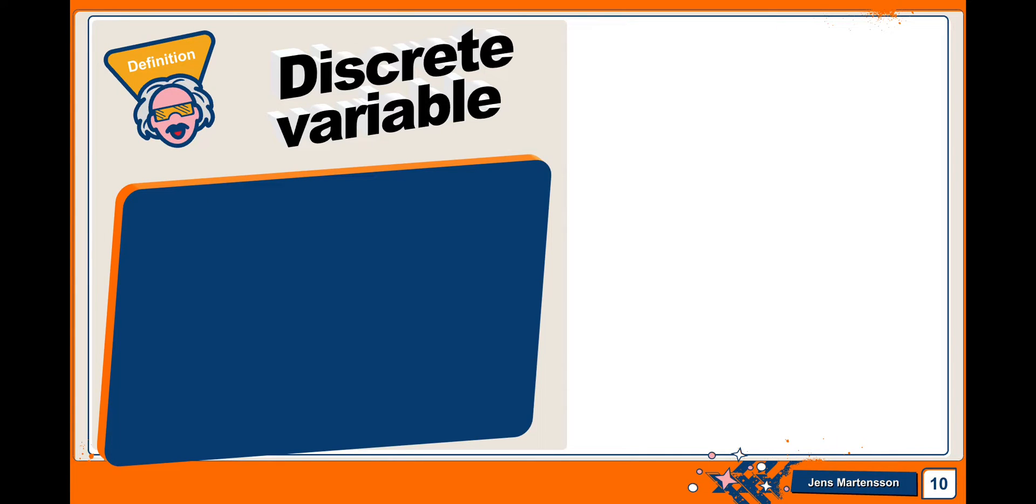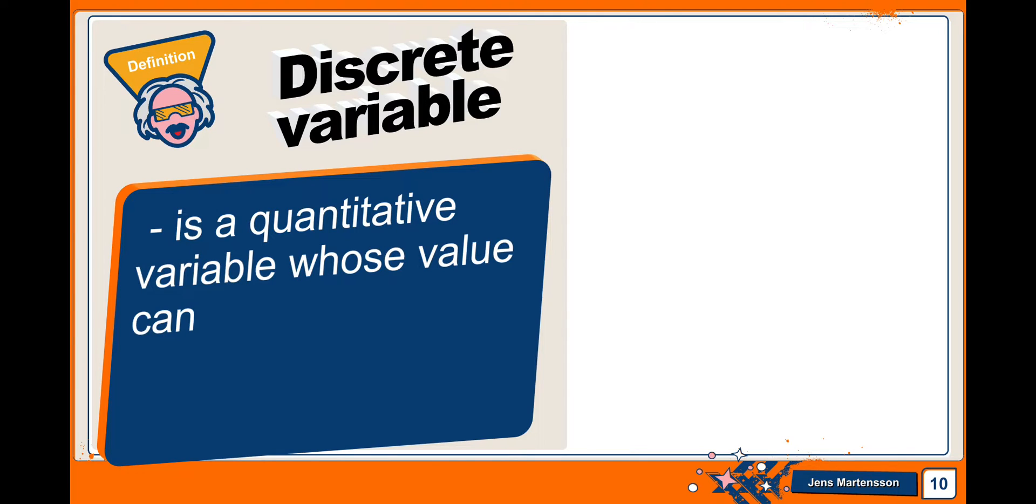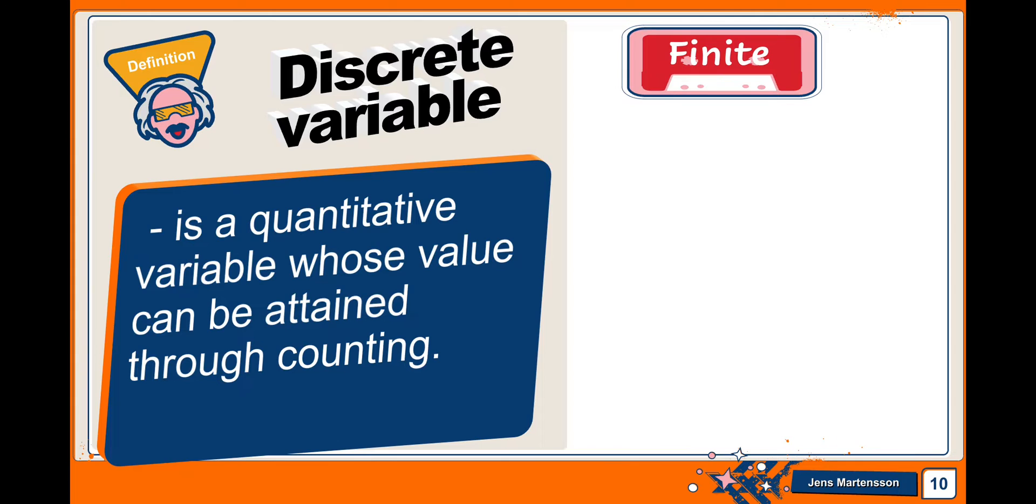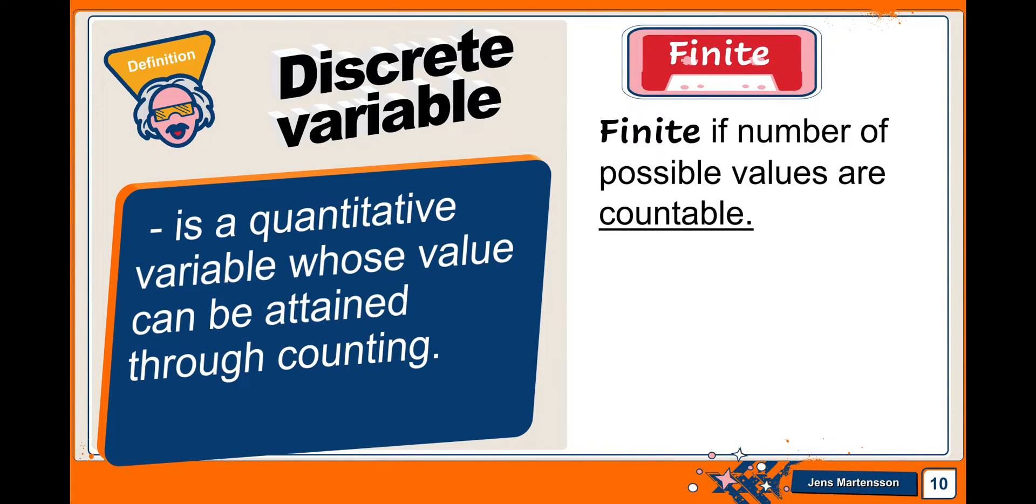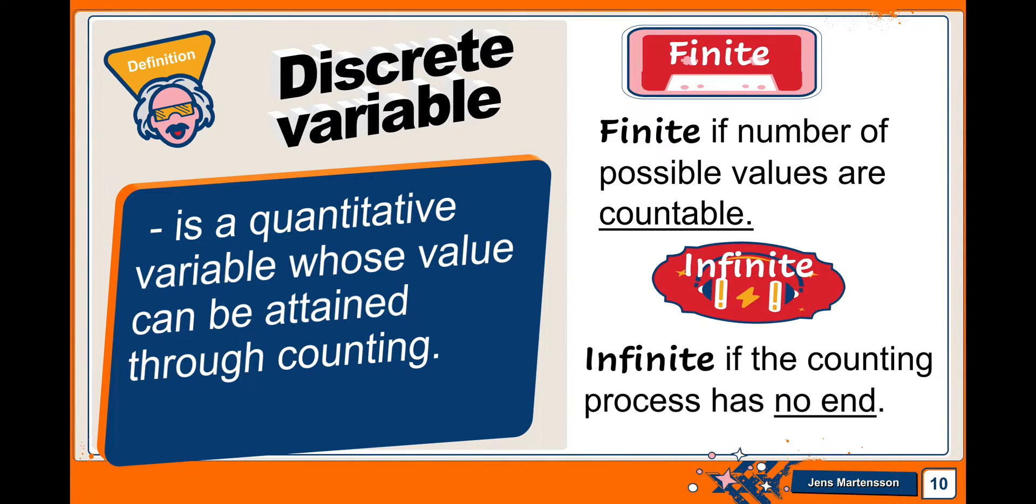There are two varieties of random variables that are numerical in nature. The first one is discrete variable. Discrete variable is a quantitative variable whose value can be attained through counting, and that is finite if the number of possible values are countable, and infinite if the counting process has no end.